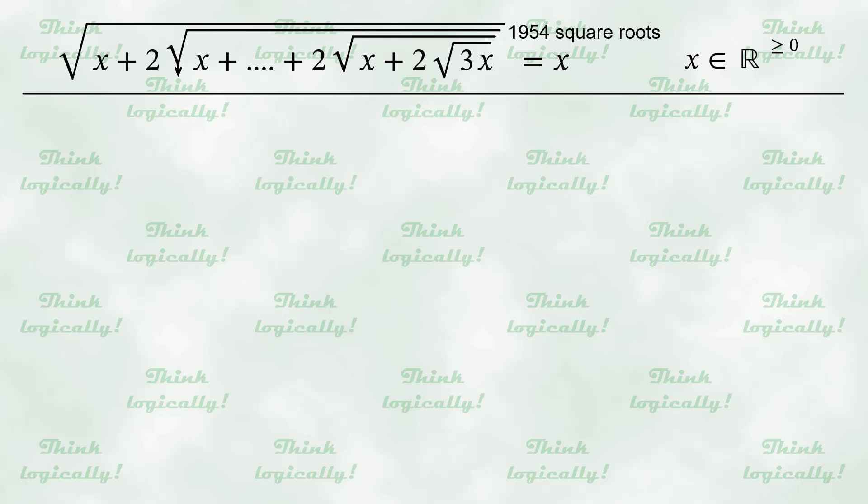Therefore, the set of non-negative real numbers is the domain for the equation. It can be also noticed that if x is 0, then both sides of the equation are equal to 0. Therefore, x equals 0 is the solution of the equation. And we are looking for other solutions, assuming x to be positive.